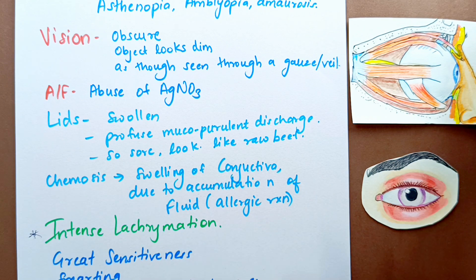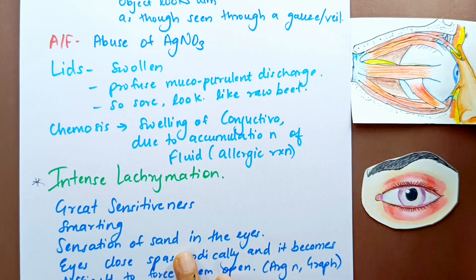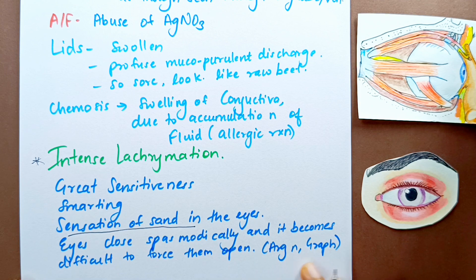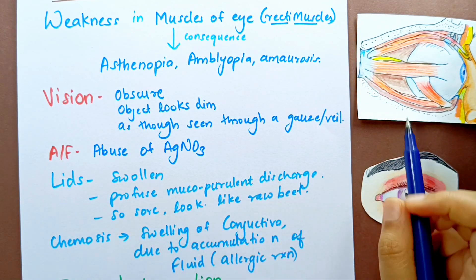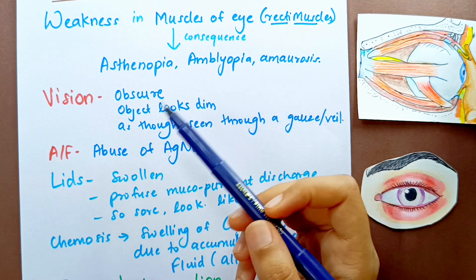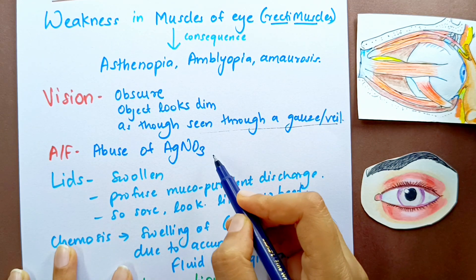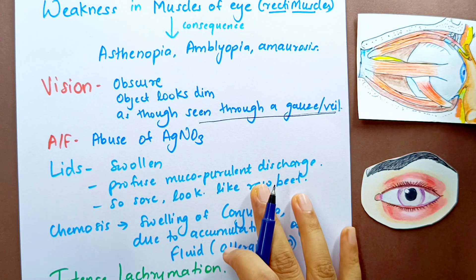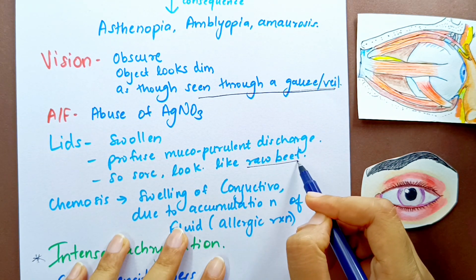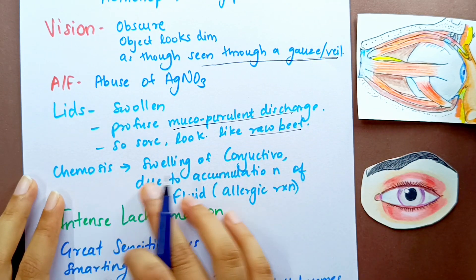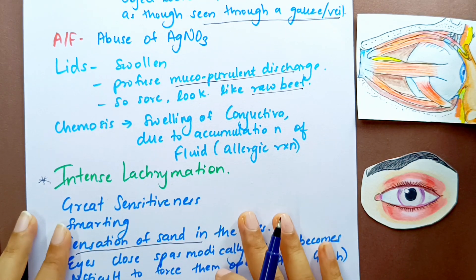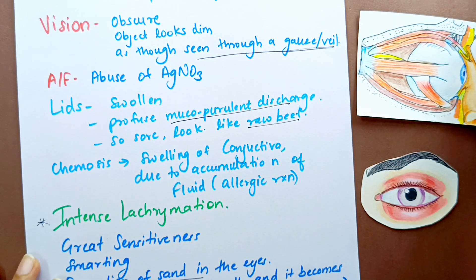In these patients the lids are swollen with profuse mucopurulent discharge; the lids are so sore they look like raw beef. There is chemosis — swelling of the conjunctiva due to fluid accumulation as an allergic reaction. There is intense lacrimation, great sensitiveness, a smarting sensation, and sensation of sand in the eyes. The eyes close spasmodically and it becomes difficult to force them open, like Argentum nitricum and Graphites.